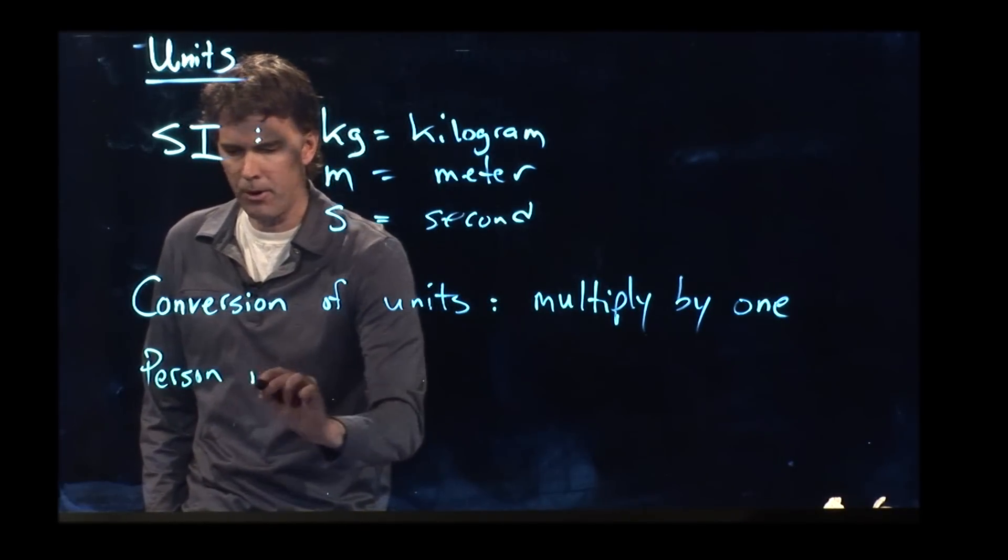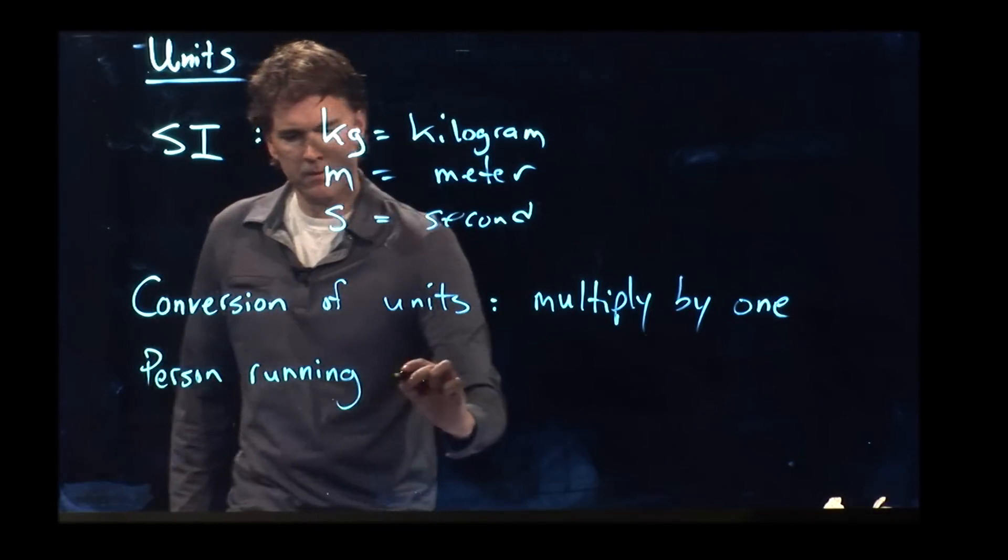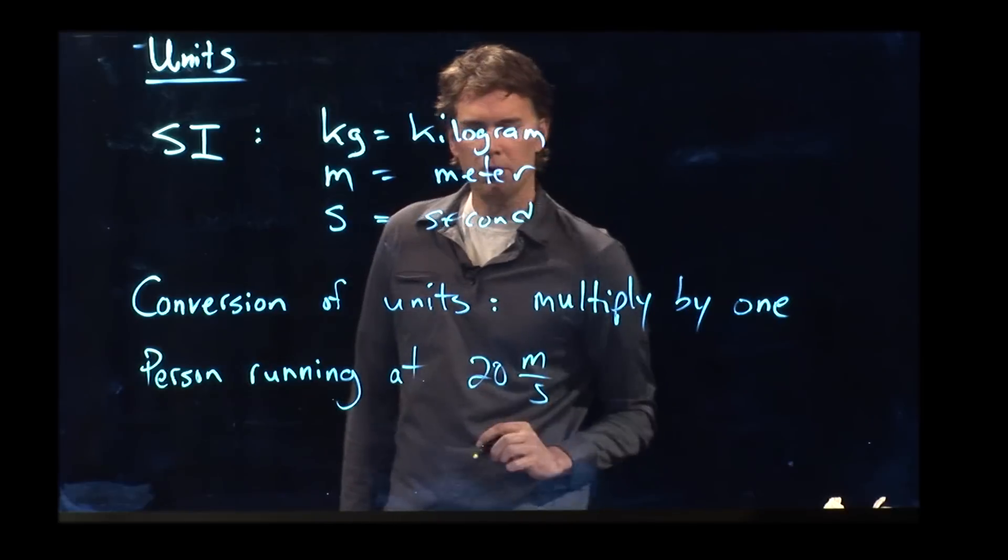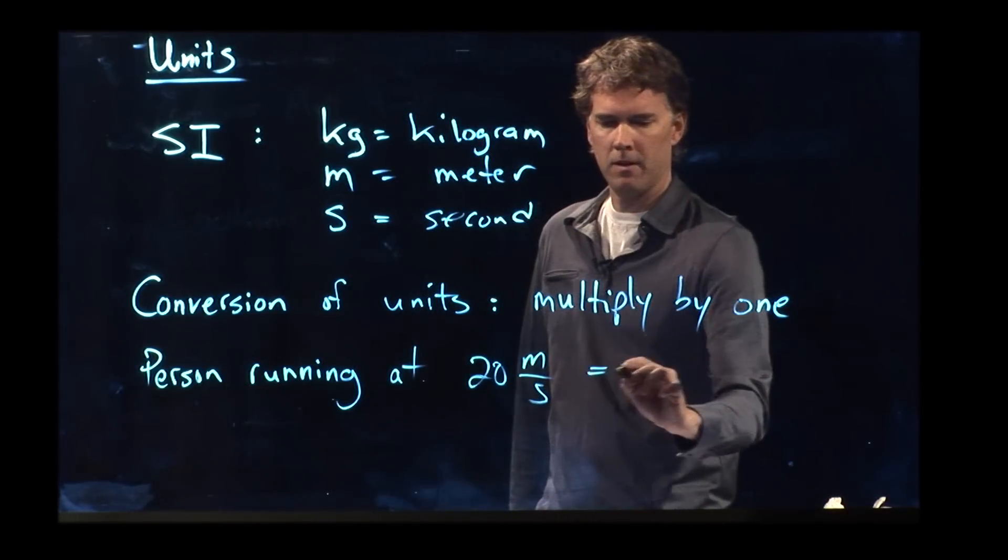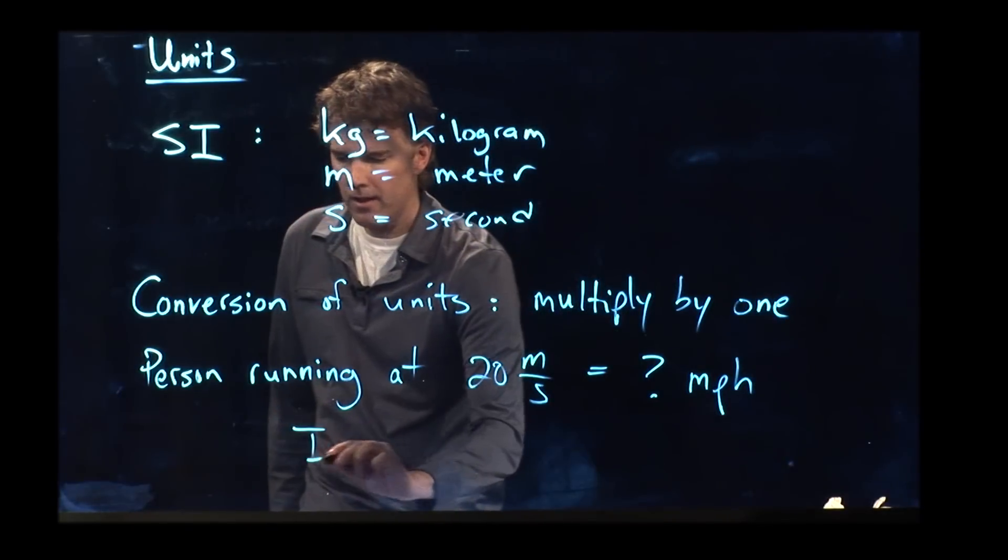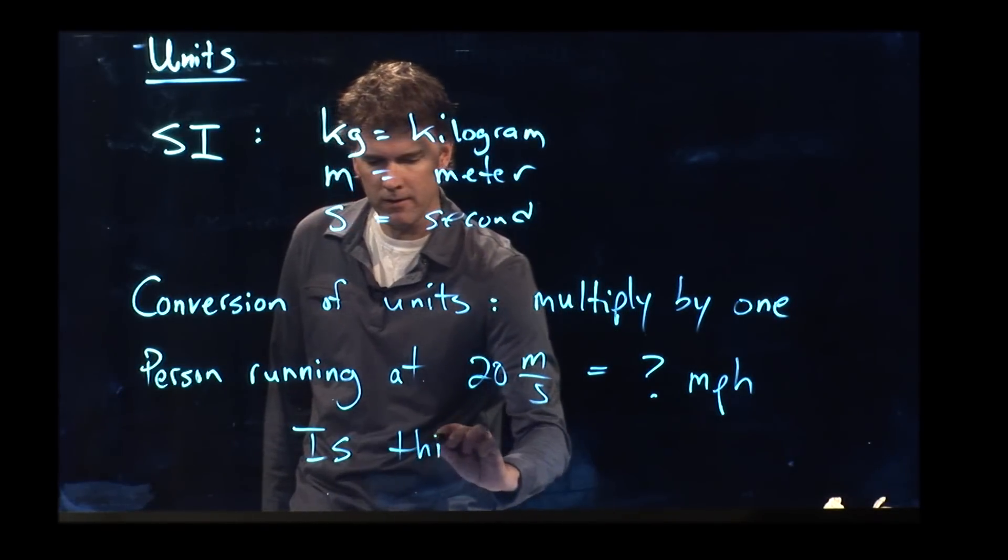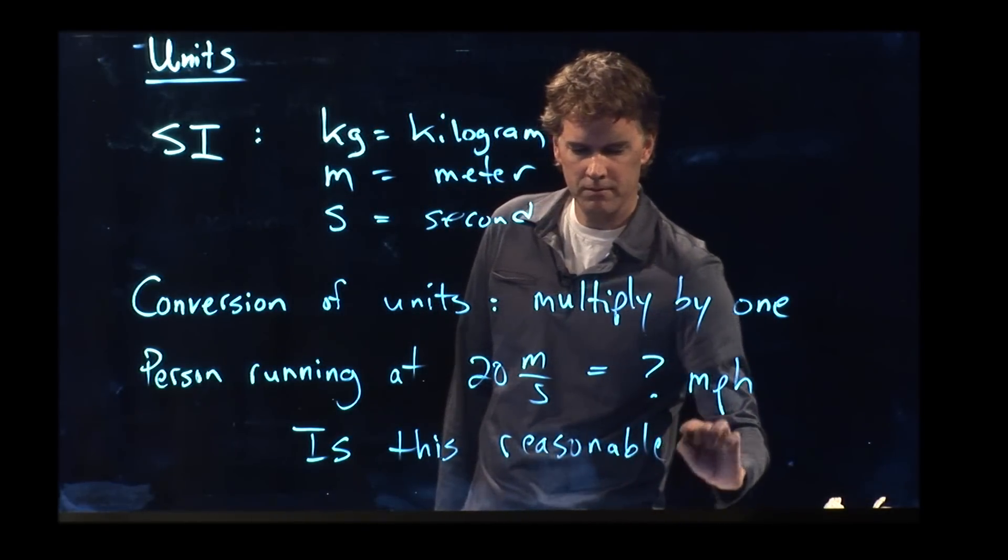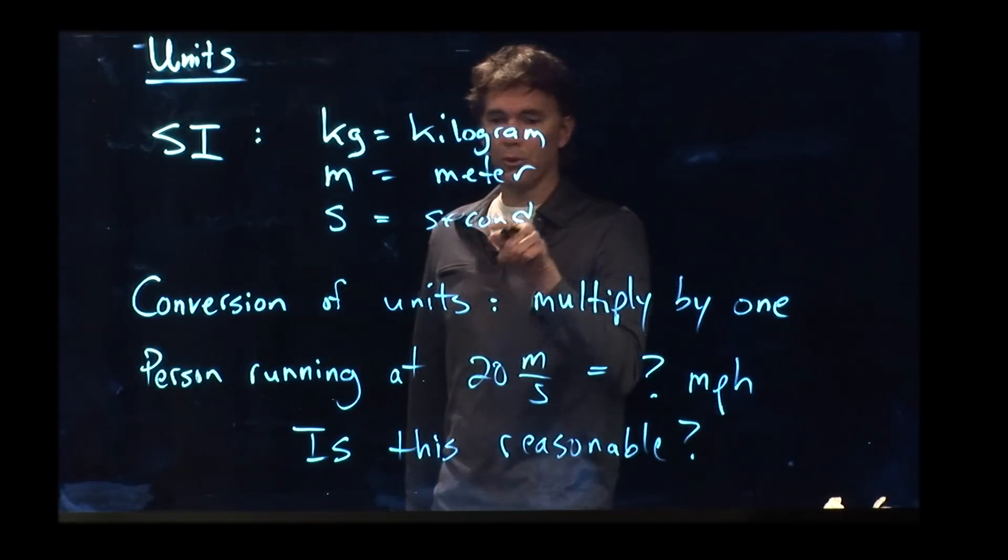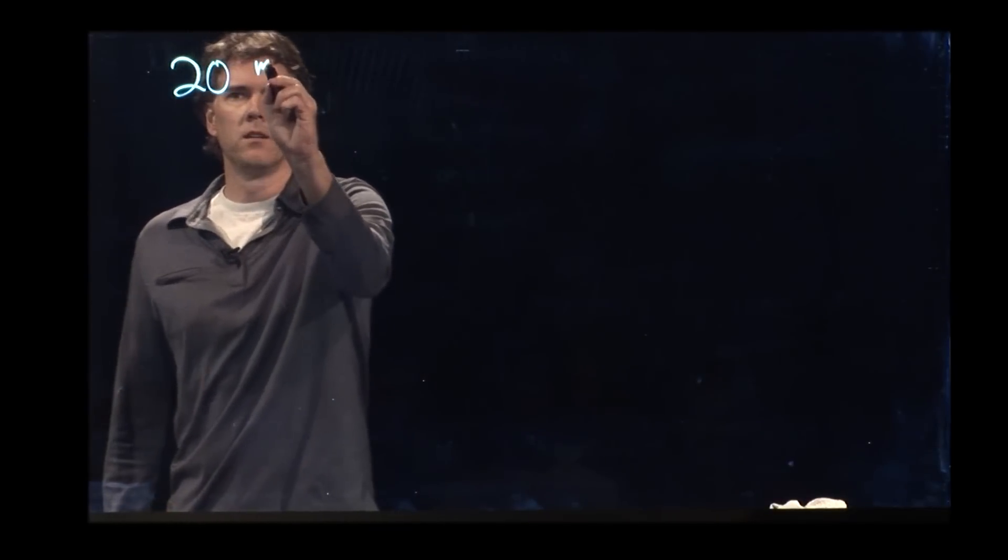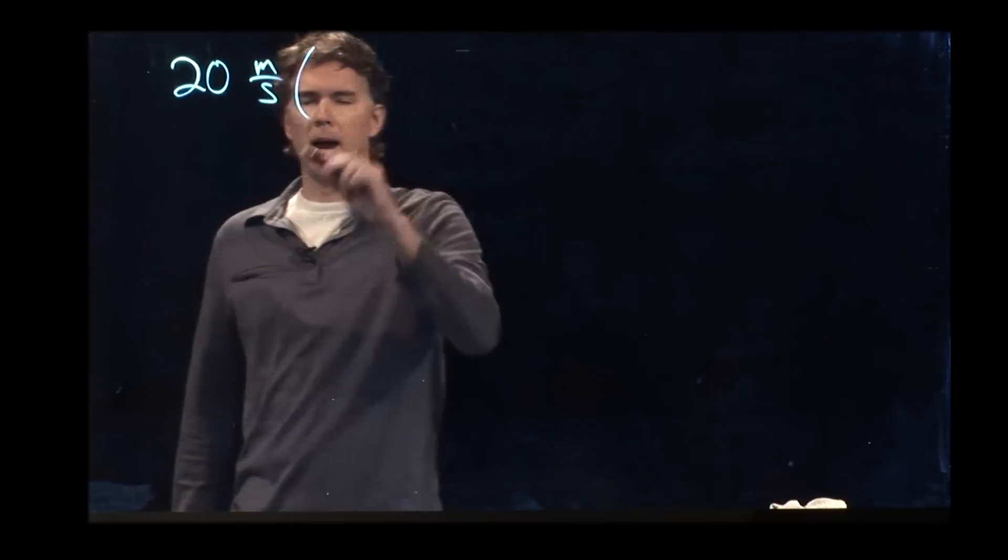Let's say we have a person running. And they're running at 20 meters per second. How fast is that in miles per hour? And before we do that, let's ask this question. Is this reasonable? Should they be able to run at 20 meters per second?